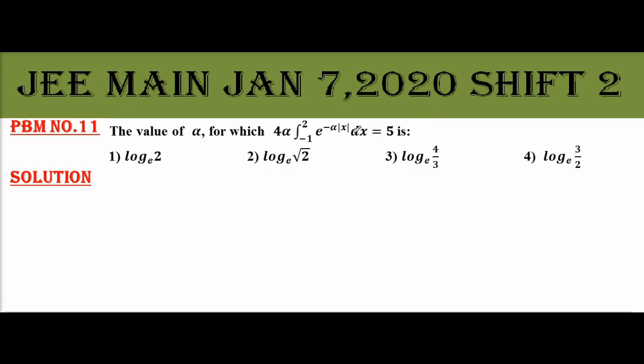This is again a very simple problem on integration. Mod x on a definition, we already discussed a lot of problems, so we will straight away get into the problem. Given 4α integral -1 to 2 e^(-α|x|) dx = 5. What is the α value?